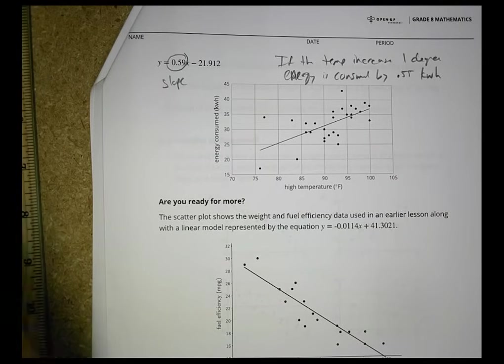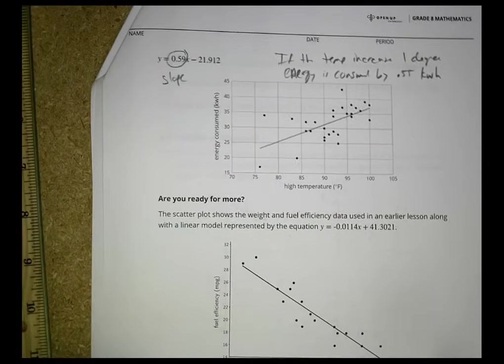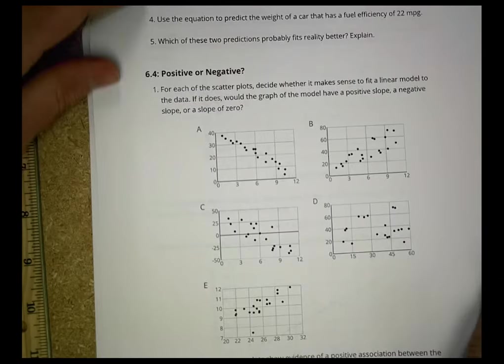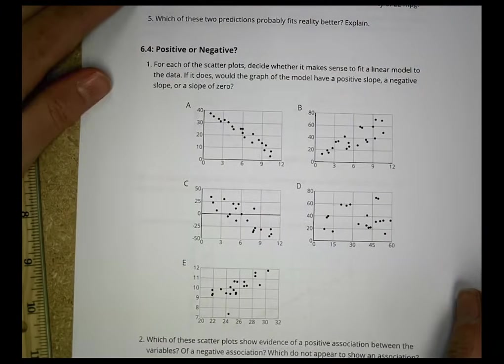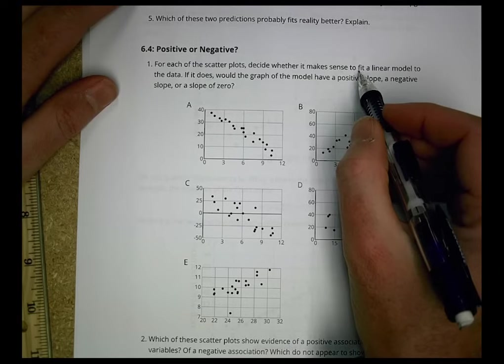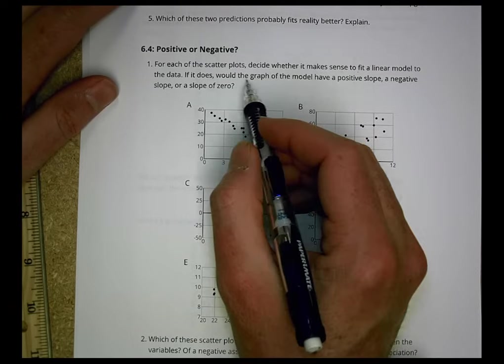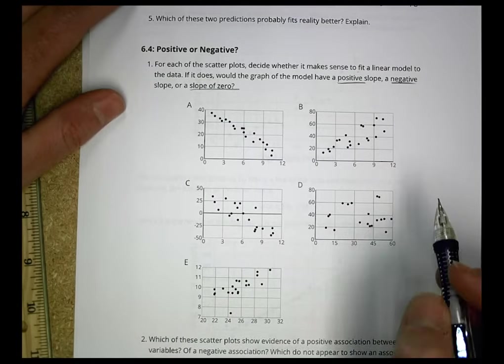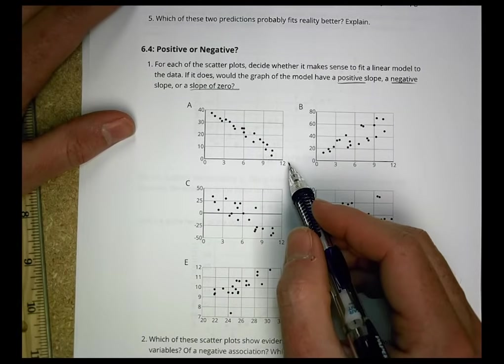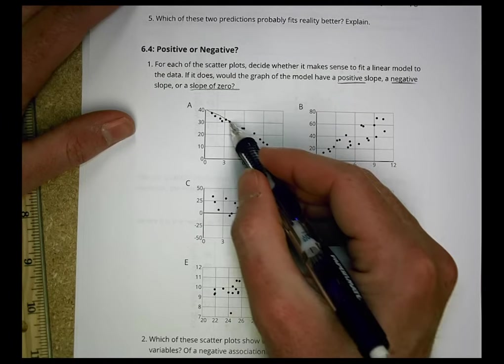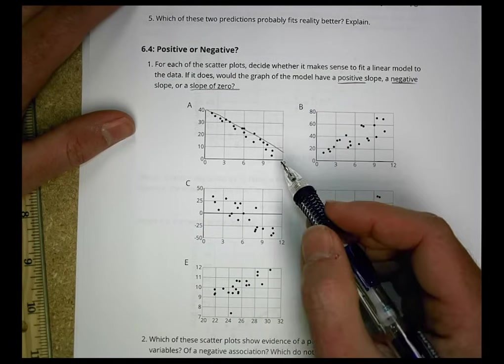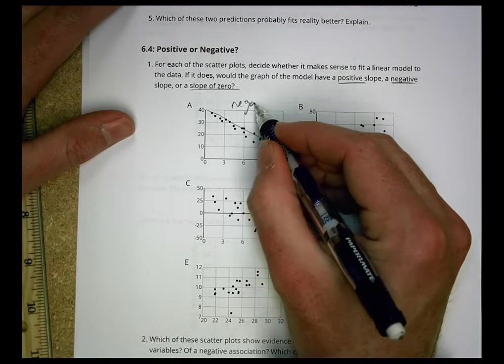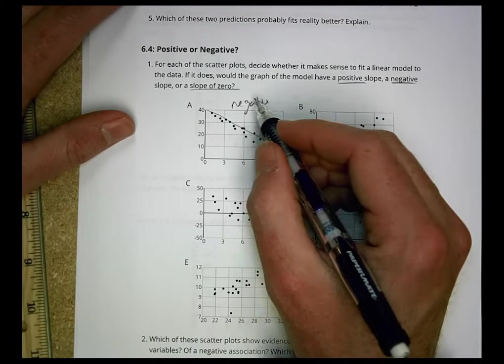All righty. I'm going to move on past the are you ready for more, and I'm going to go to the next activity, number 4, positive or negative. For each of the scatter plots, decide whether it makes sense to fit a linear model to the data. If it does, would the graph of the model have a positive, negative slope, or slope of 0? So could you make a line there? Yeah. You definitely could put a line right through there. What kind of line do you have? We would say it's going to be negative.